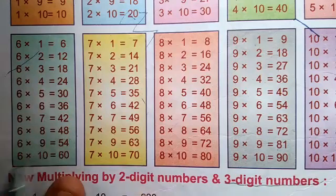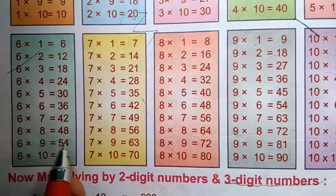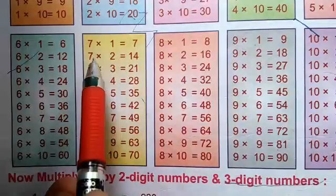6 times 8 is 48, 6 times 9 is 54, 6 times 10 is 60. Now table of 7: 7 times 1 is 7, 7 times 2 is 14.